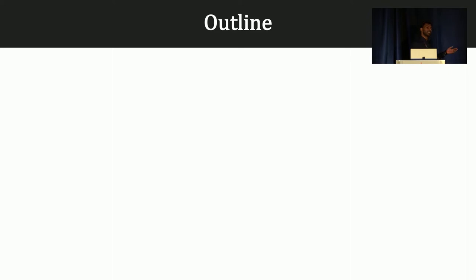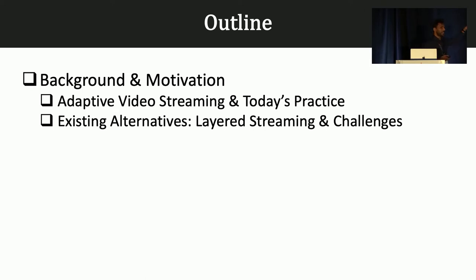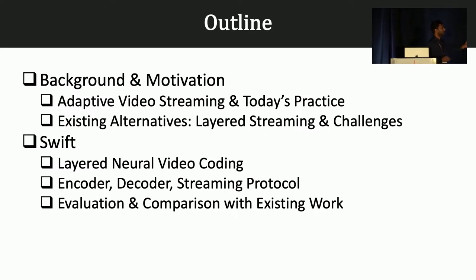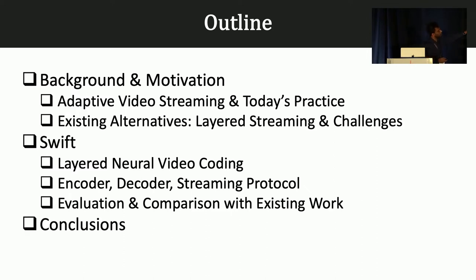Before going into the details, let me give you an outline of what I'm going to talk about today. I'll spend a little bit of time on background and motivation, demonstrating some of the fundamental problems and challenges of today's video streaming systems. Then I'll introduce our system, Swift, which is based on layered and neural video coding and has three main components: an encoder, a decoder, and a streaming protocol. I'll conclude by showing some performance benefits of Swift compared to existing works.